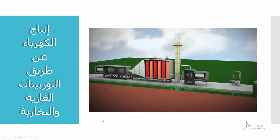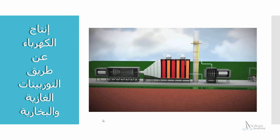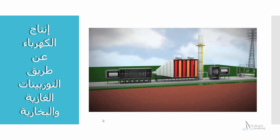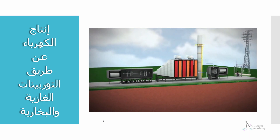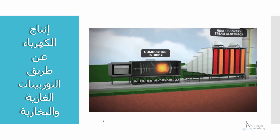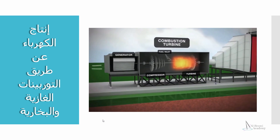The combined cycle turbine technology enables power plants to generate 50% more electricity from its fuel than it would with a conventional single-cycle power system. Under this dual-phase system, two combustion turbine generators operate in conjunction with two heat recovery steam generators and a steam turbine generator. In the first cycle, fuel is burned, and the resulting combustion gases power two turbine generators to produce electricity.